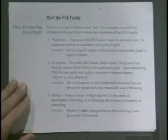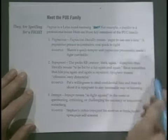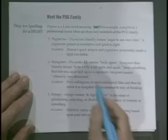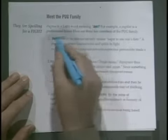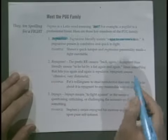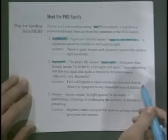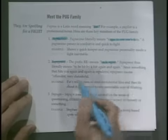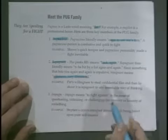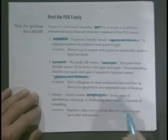Next, we have the pug family. Pug means using your fist, so a pugilist is a boxer. Pugnacious is eager to use one's fist, ready to fight. Something that is repugnant — re means back or again — so repugnant means distasteful, offensive. Impugn means to fight against.